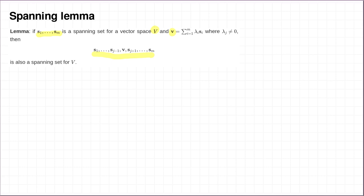To prove this, we're going to start by making a definition, which is that S will be the span of this new list of vectors. So the list that you get by swapping S_J for v contains S1 up to S_{J-1}, and then it contains v, and then S_{J+1} up to SM. So the goal of our proof is to show that capital S is equal to the vector space, capital V.